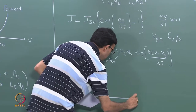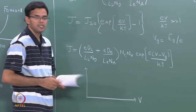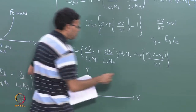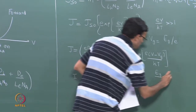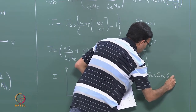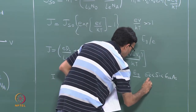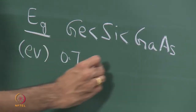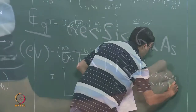Let me plot I versus V for three materials: germanium, silicon, and gallium arsenide. In terms of band gap E_g, germanium has a smaller band gap than silicon, which is smaller than gallium arsenide. Typical values are: germanium around 0.7 eV, silicon 1.1 eV, and gallium arsenide 1.43 eV.